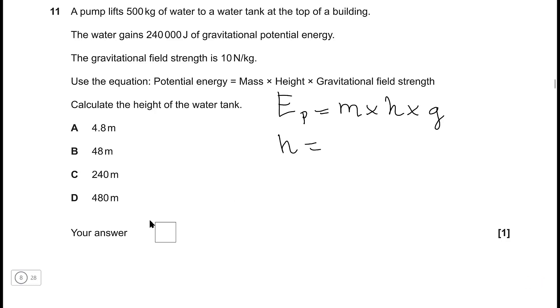So the height is equal to the potential energy divided by the mass times g. Let's plug in some numbers. The potential energy is given in the question, so that's going to be 240,000.